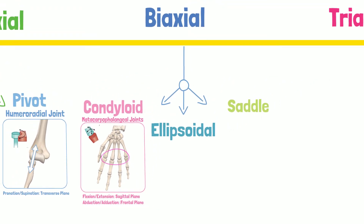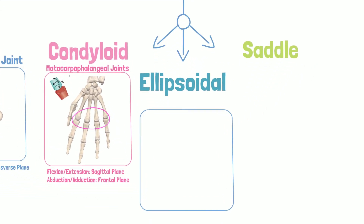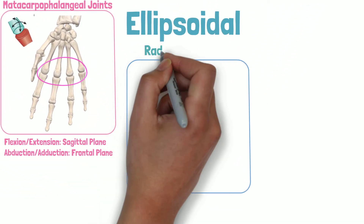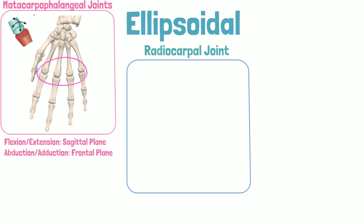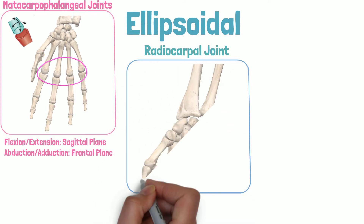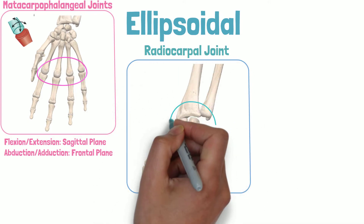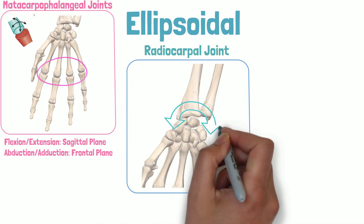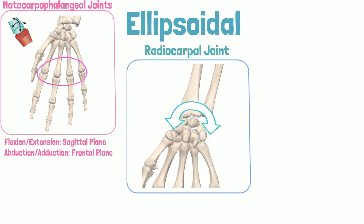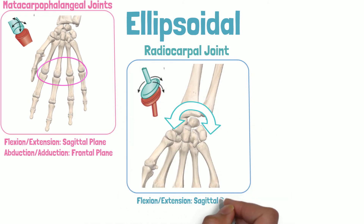An example of an ellipsoid joint is the radiocarpal joint. It is a union of an elongated convex surface with an elongated concave elliptical cavity. The motions allowed are flexion and extension in the sagittal plane, and abduction and adduction in the frontal plane.